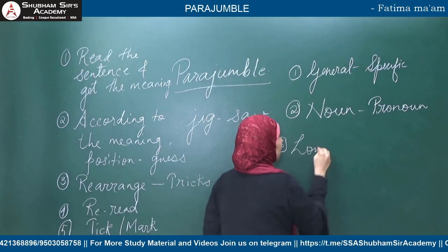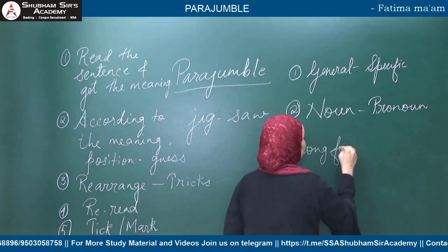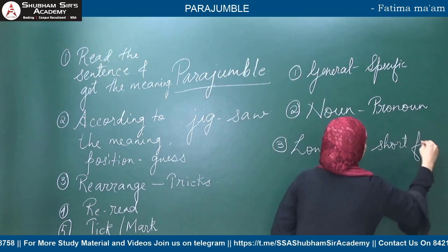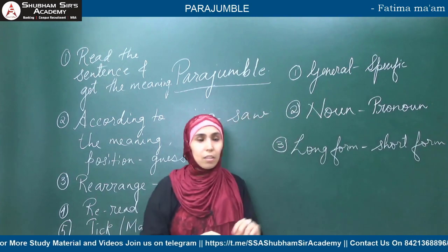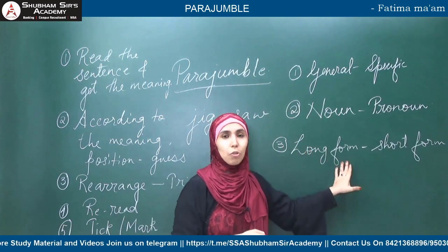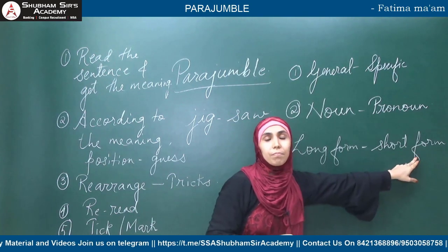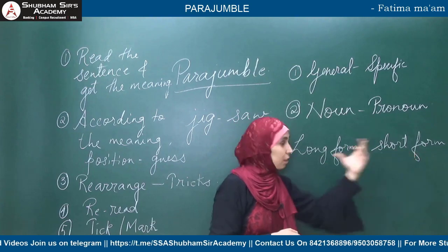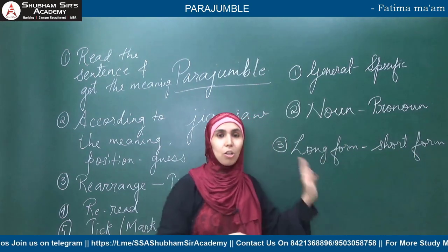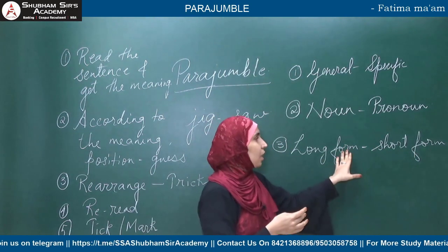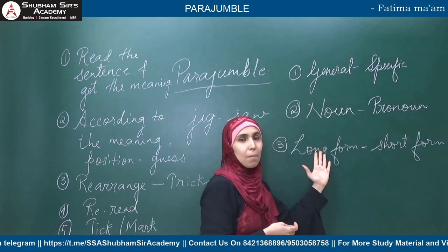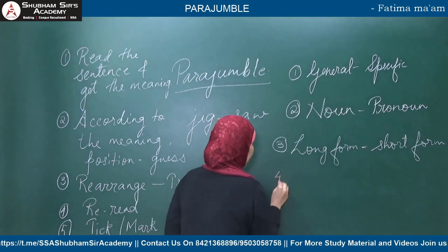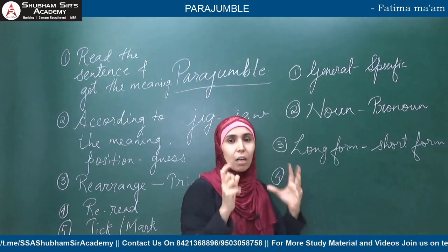Third trick: generally the long form comes first, followed by the short form. For example: 'Mr. Narendra Modi' and later 'Mr. Modi.' 'Sushant Singh Rajput' and then 'Sushant.' 'Aam Aadmi Party' and then 'AAP.' 'Bhartiya Janata Party' and then 'BJP.' So long form is followed by short form.